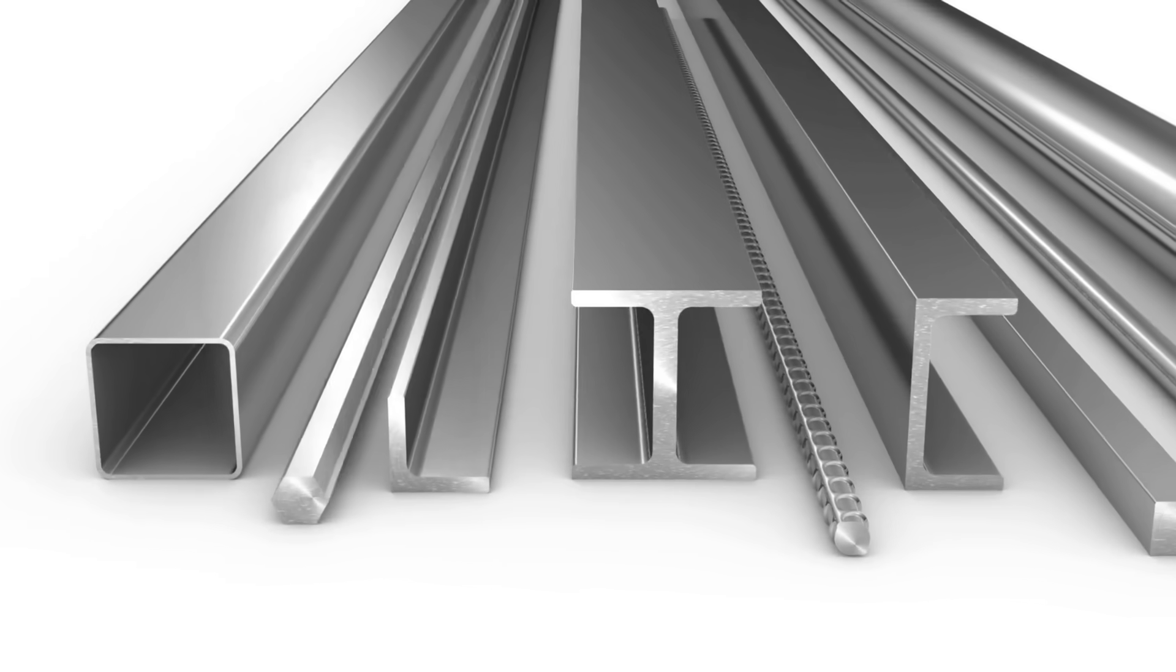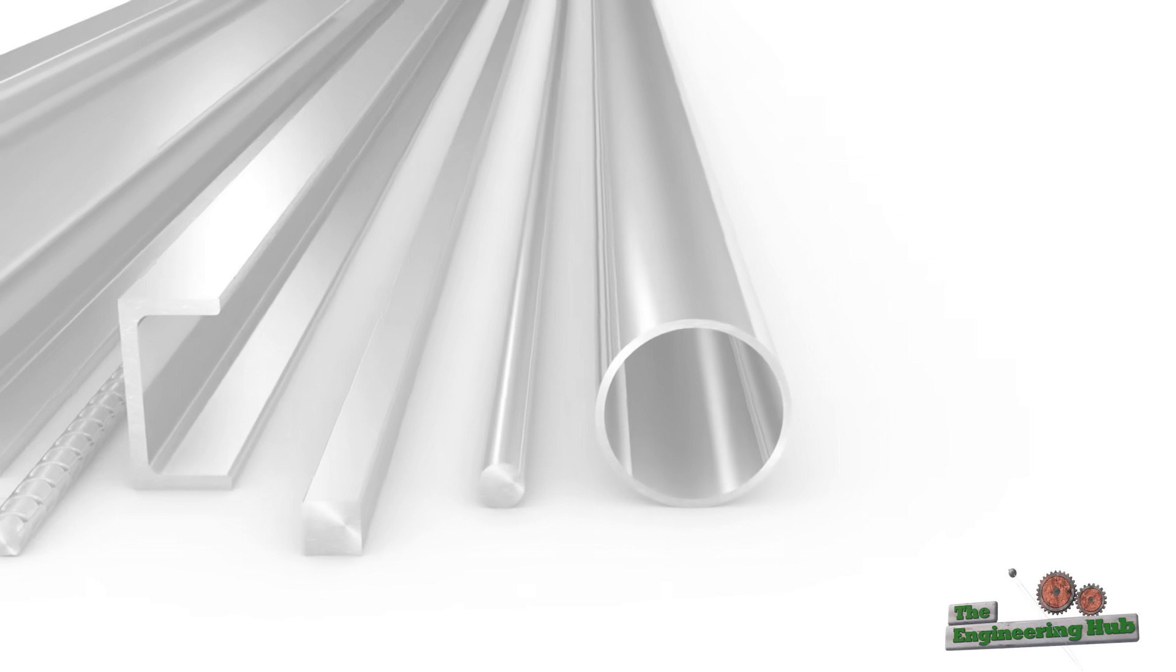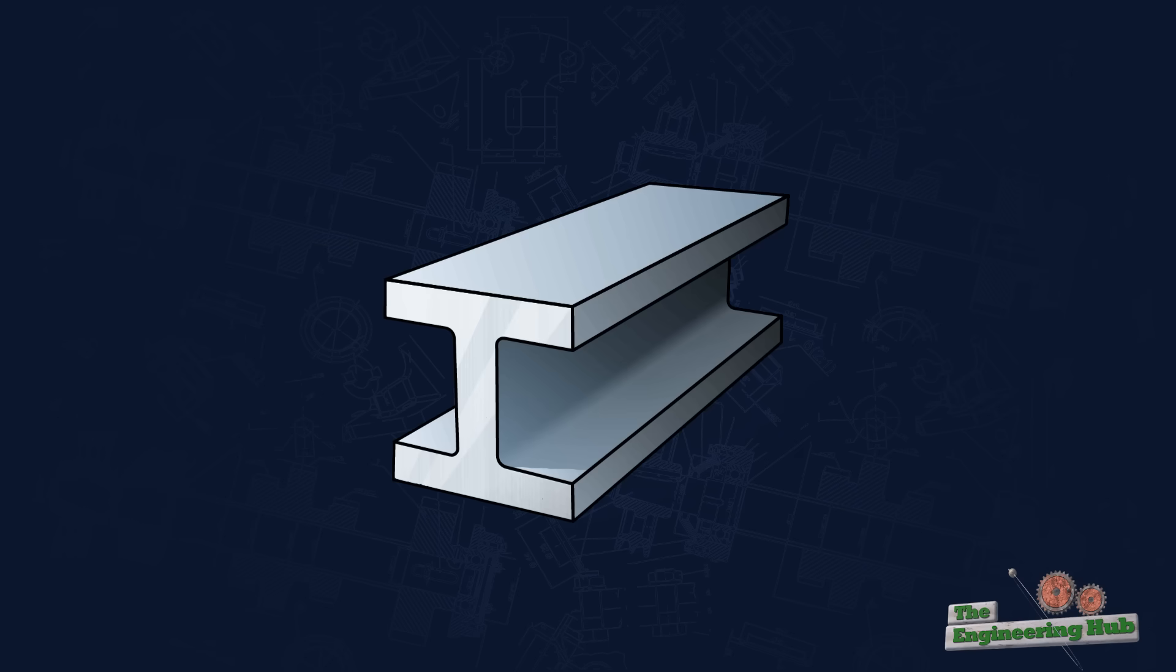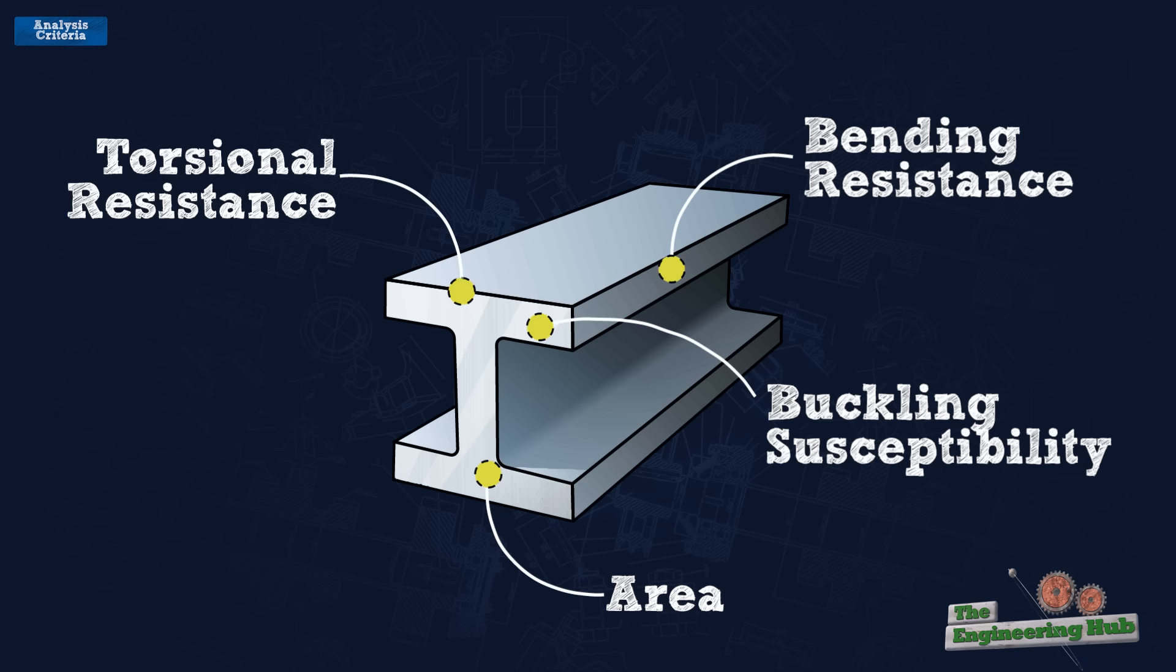Many shapes of cross sections exist for structural elements, and each come with their own advantages and disadvantages. The primary considerations for structural shapes are their area, bending resistance, buckling susceptibility, torsion resistance, symmetry, and workability.